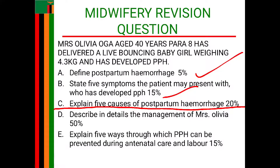Another cause is retained products of conception, where a part of the placenta, membranes, or any product of conception that should have been expelled after delivery is retained within the uterus. This causes poor uterine contractions — or no contractions — meaning there is no mechanism to block the blood vessels, leading to excessive bleeding.